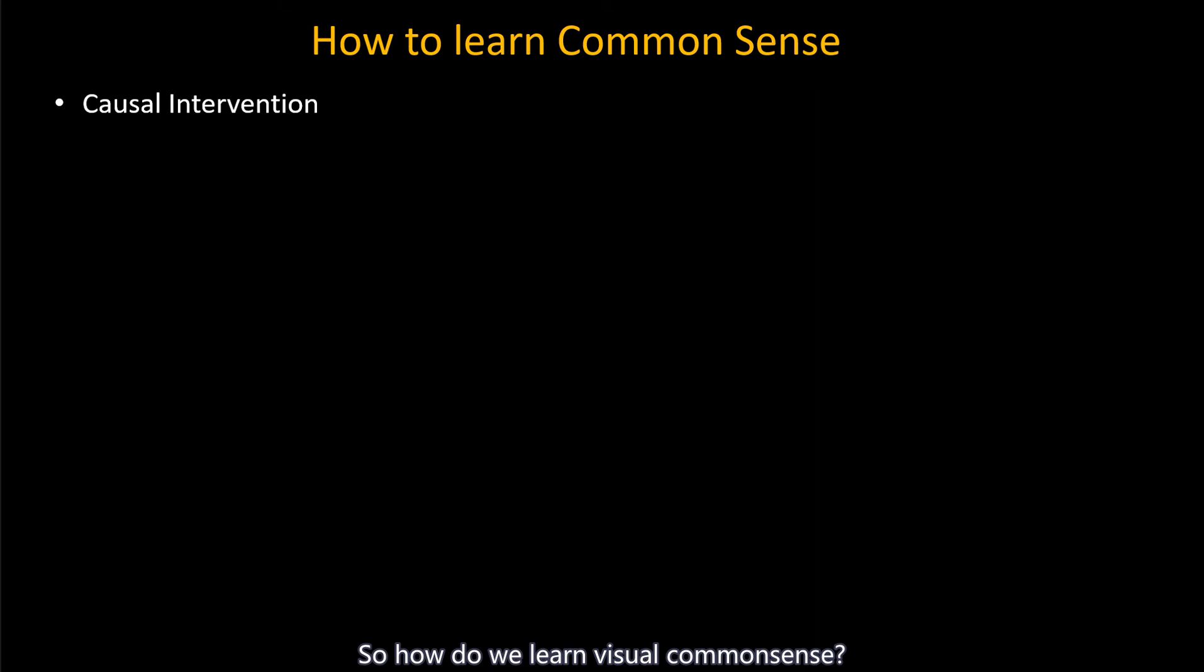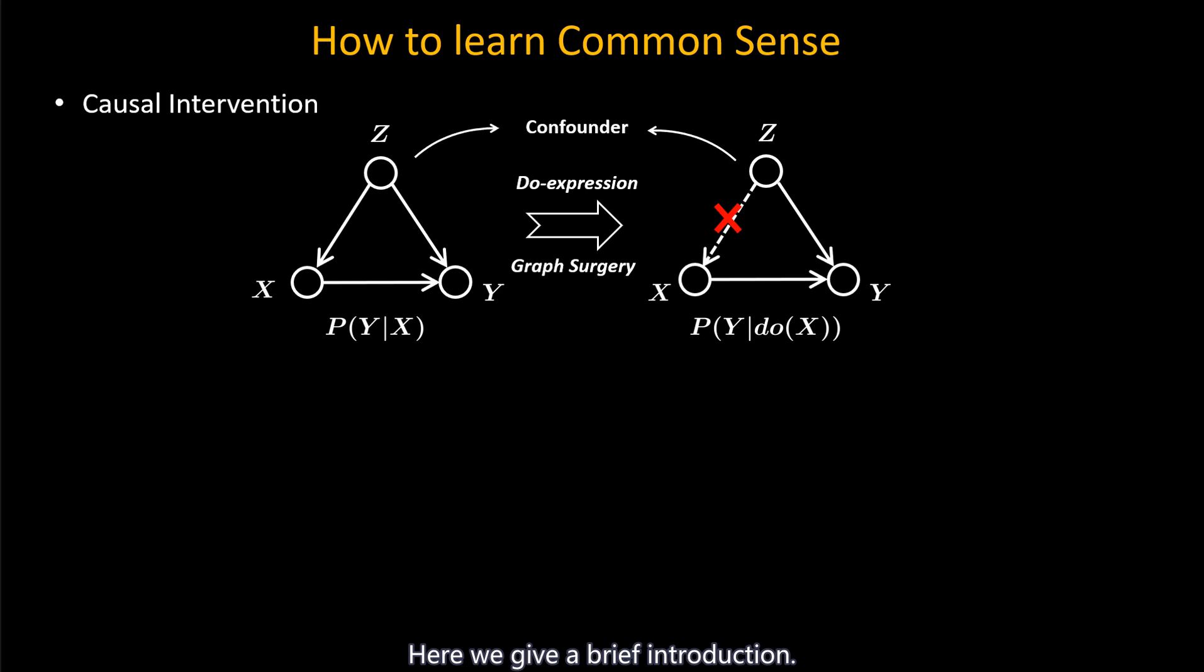So, how do we learn visual common sense? In this paper, we use the causal intervention theory to find the key reason behind the bias confounder. Here, we give a brief introduction.